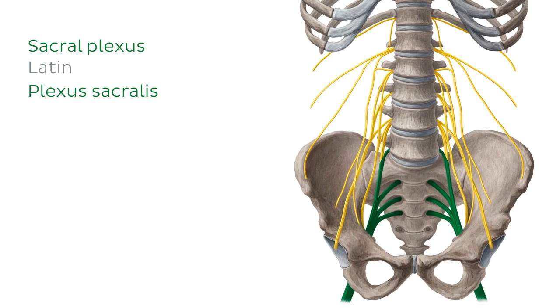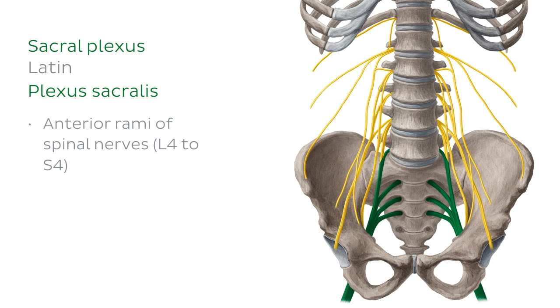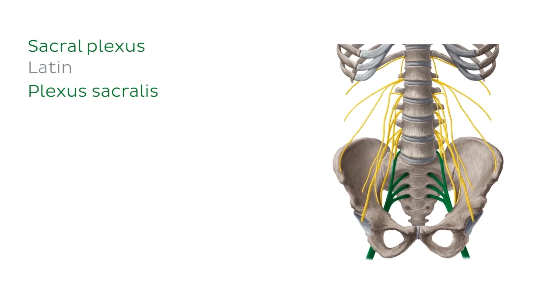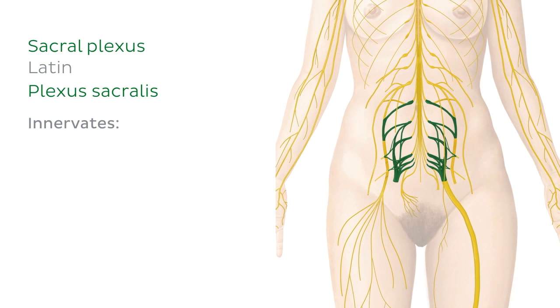The sacral plexus is a network of nerves that is formed from the interconnections between the anterior rami of spinal nerves from L4 to S4. This plexus mainly serves the lower limb, the largest of its nerves travelling into the posterior thigh.